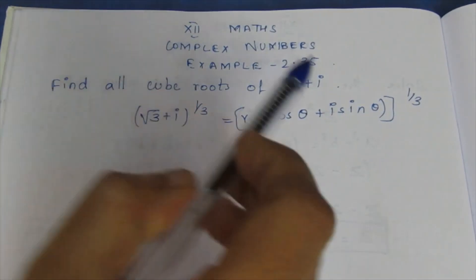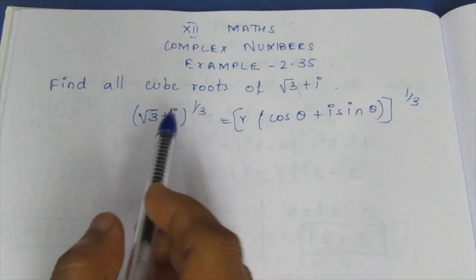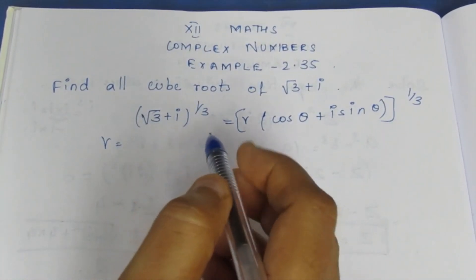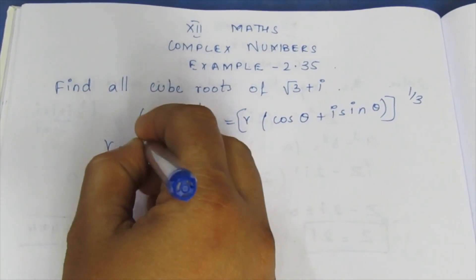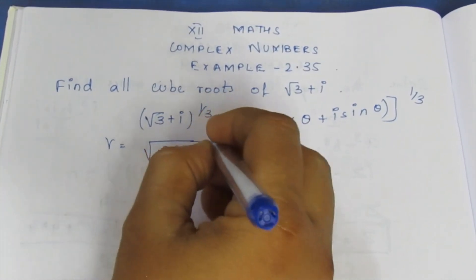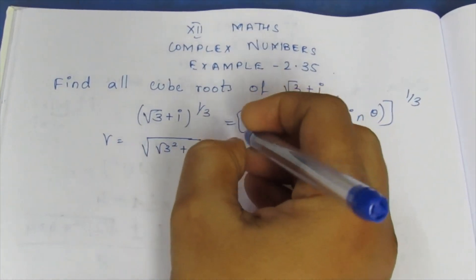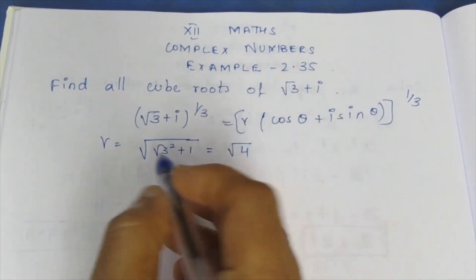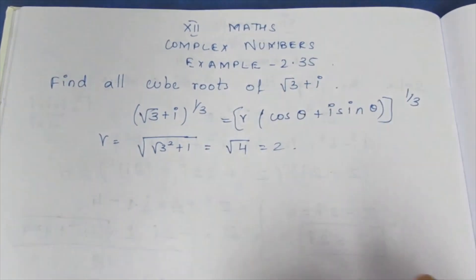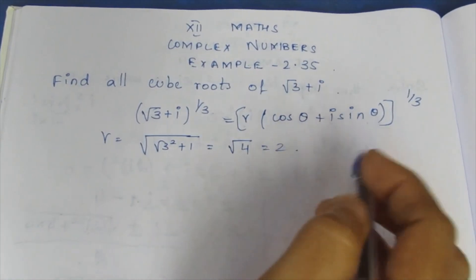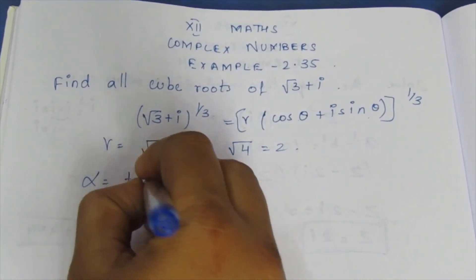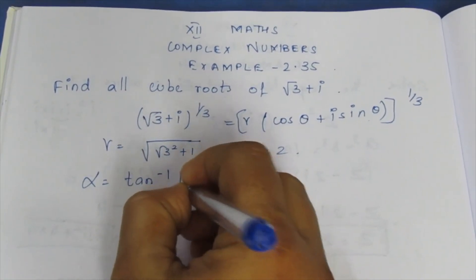So we find the modulus and theta values. r is equal to the modulus of (√3 + i), which is the square root of (√3)² + 1², that gives root of 4, and root 4 is 2. So r = 2. Now find cos θ and sin θ. Alpha is equal to tan inverse of y by x.